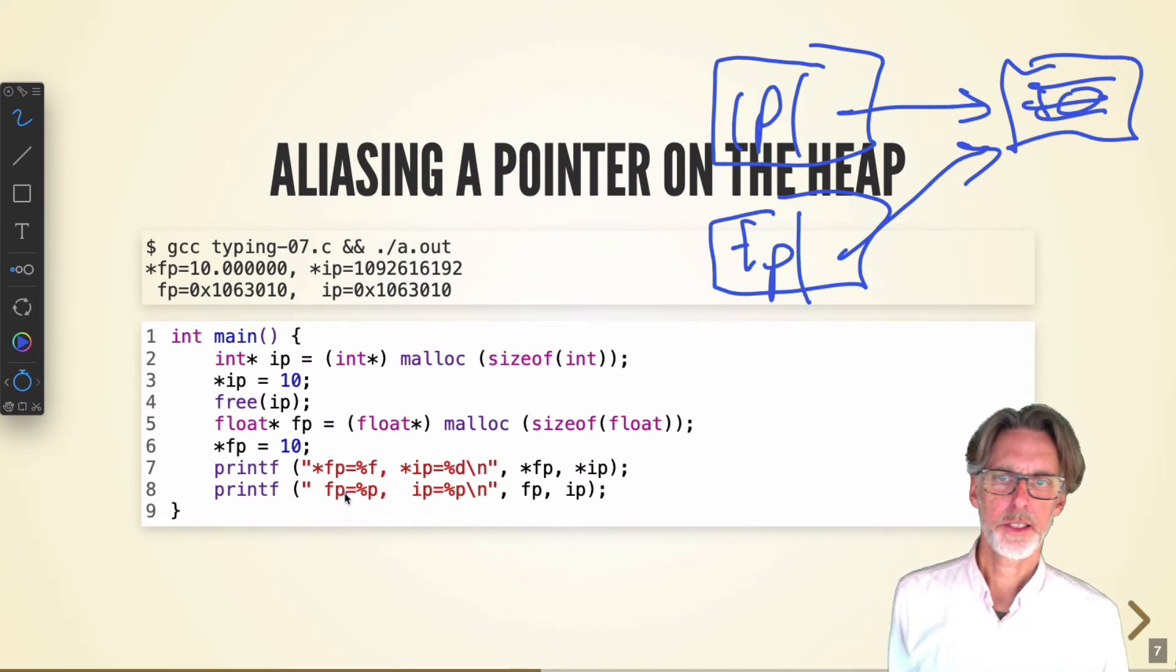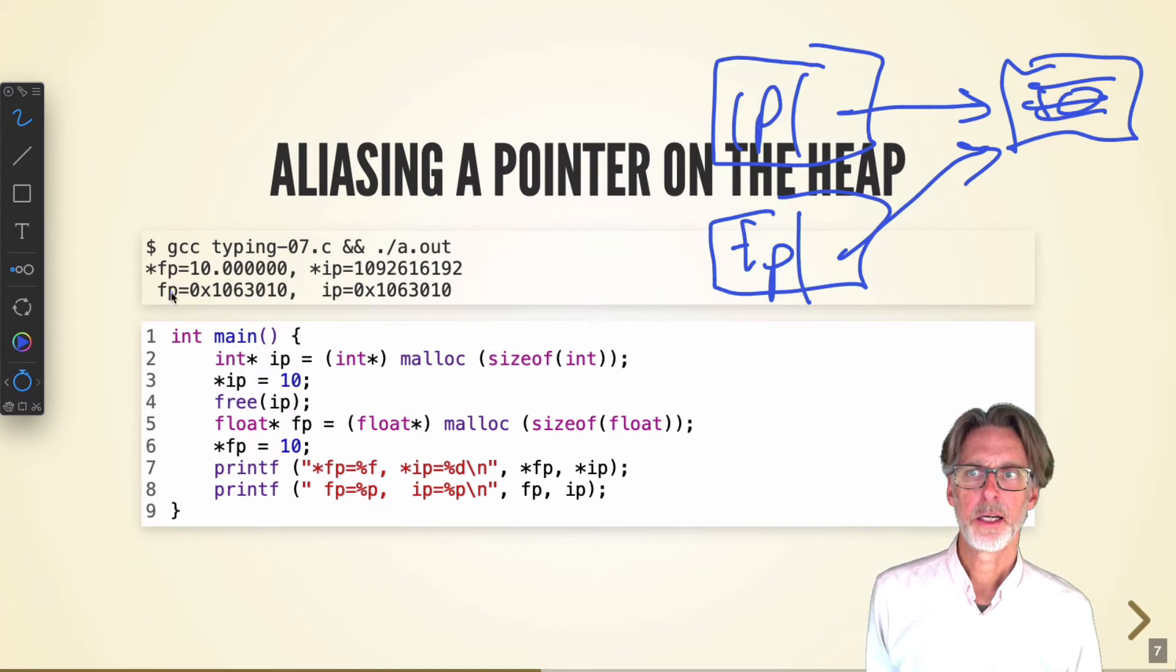Why is this happening? Well, you can see that, in fact, it is true that the diagram I've drawn is correct. FP and IP are pointing to the same address in memory.